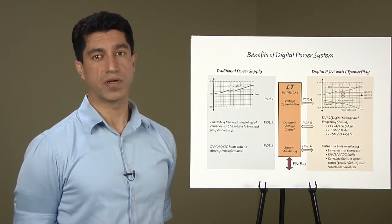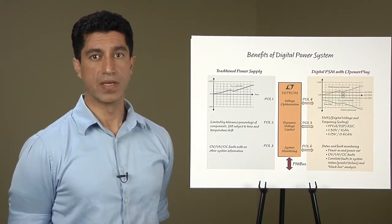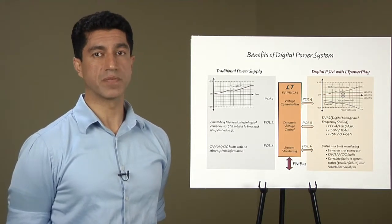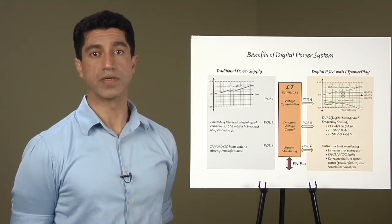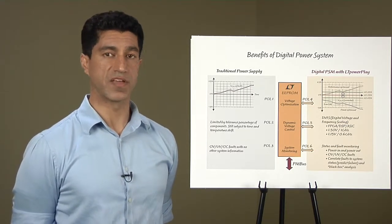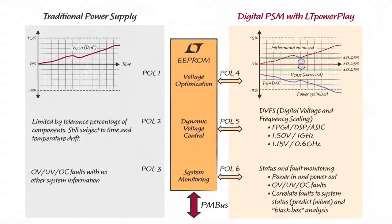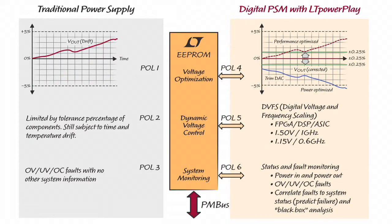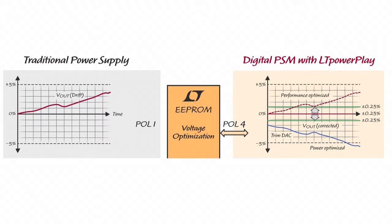With Linear Technology's PSM products, you can take control of your system's power. The first benefit is voltage optimization. Output voltage accuracy of a regulator is critical in powering ASICs and FPGAs. The traditional power supply's output voltage drifts with time due to temperature variations and manufacturing tolerances. These voltage drifts may violate design margins.